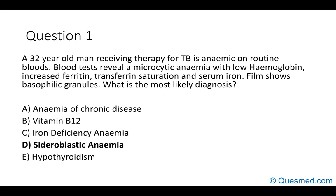Anemia of chronic disease can be associated with a microcytic anemia but is most commonly associated with a normocytic anemia, making it less likely. Vitamin B12 is more associated with a macrocytic anemia, as is hypothyroidism. That's why sideroblastic anemia is the correct answer here.